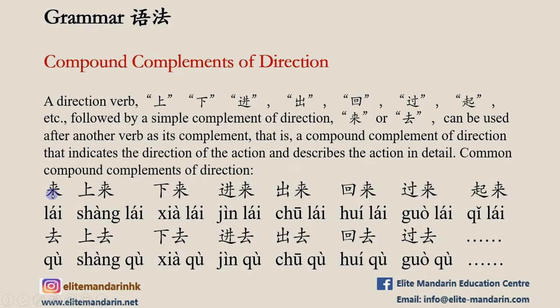来 (lái) means 'to come.' 去 (qù) means 'to go.' These two characters form the basis of compound directional complements.